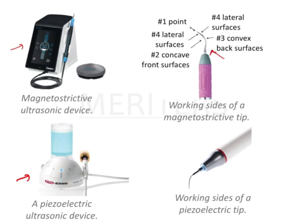This is the magnetostrictive tip. You can see the point of the tip — that is the first working surface. Then there are the lateral surfaces — the second lateral surface. Then the back surface, which is the third working surface. And if you see this concavity — the front surface — that is your concave surface. So there are: lateral side, point, convex surface, and concave surface — these are the four working sides of the magnetostrictive tip. For the piezoelectric tip, there are the lateral areas and the tip, giving two working sides.